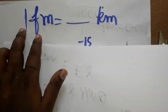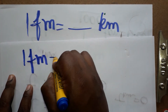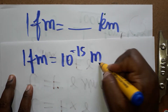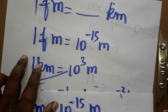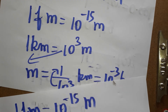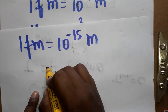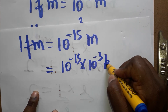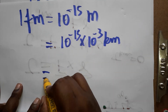Now we are going to do the conversion from femtometer to kilometer. One femtometer is 10 power minus 15 meter, and one meter is 10 power minus 3 kilometer. So we multiply: 10 power minus 15 into 10 power minus 3 kilometer.